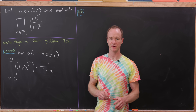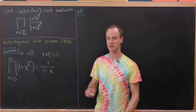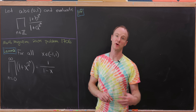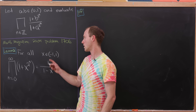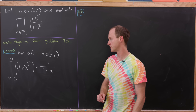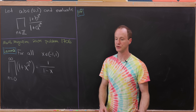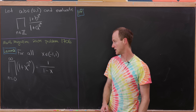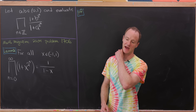When I said this was a generalization of a pretty well-known infinite product, I think it's this well-known infinite product here, which we'll prove as a lemma. That is: for all x between negative 1 and 1, not including either, we have the product as n goes from 0 to infinity of (1 + x^(2^n)) is equal to 1 / (1 - x).